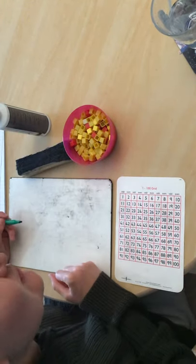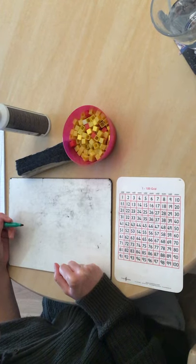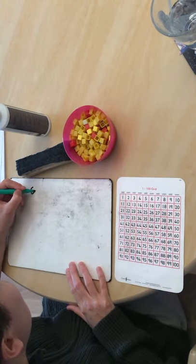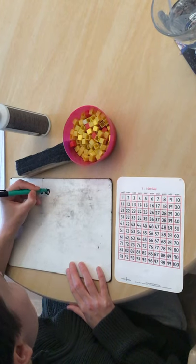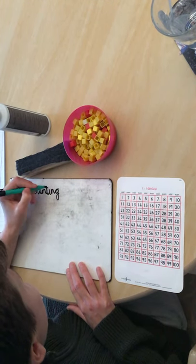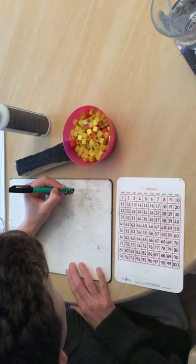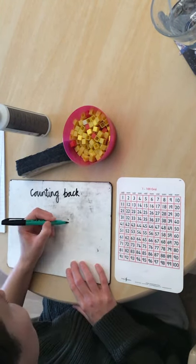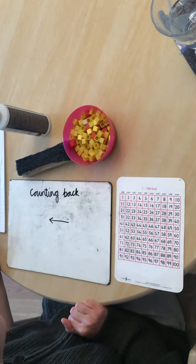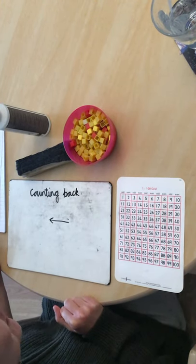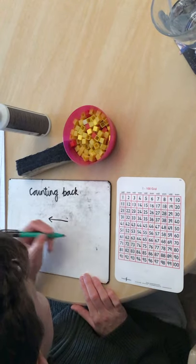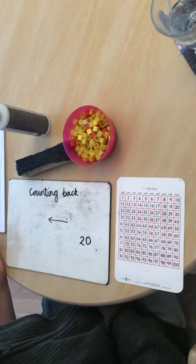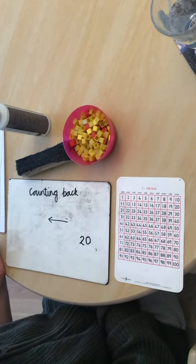Now, in order to subtract, I would like you to have a go at practising counting back. Now, you'll remember that when we count back, the numbers always get smaller, always get less, if we count back. So I'm going to count back from 20. And we've practised this a lot, counting back from 20, haven't we?